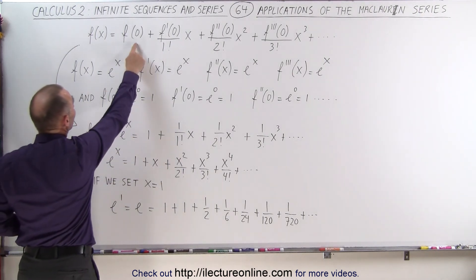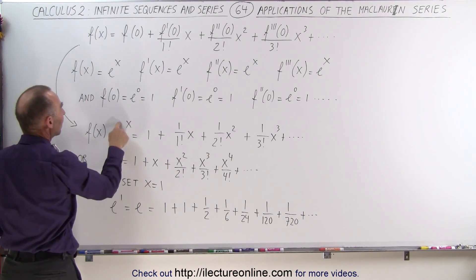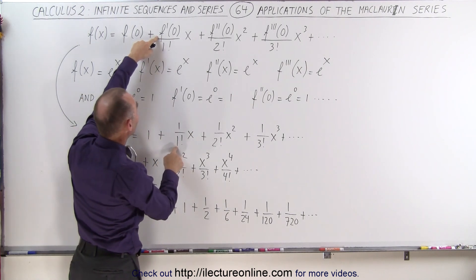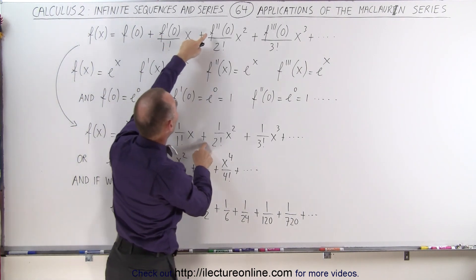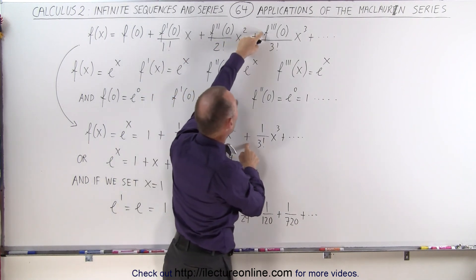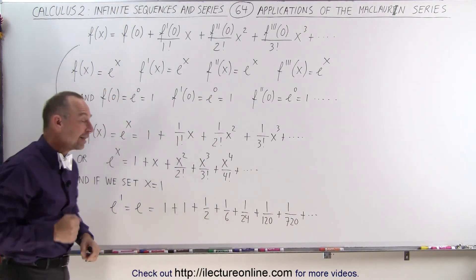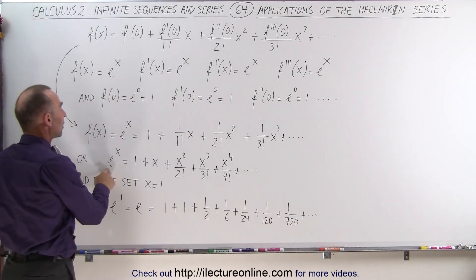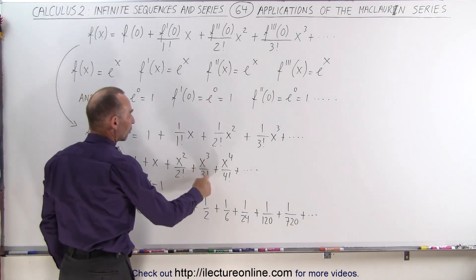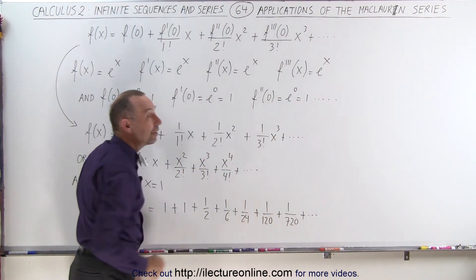Which then means if we plug that back into the original Maclaurin series, we can see that f of x, which is e to the x, is equal to 1 plus 1 divided by 1 factorial times x plus 1 divided by 2 factorial times x squared plus 1 divided by 3 factorial times x cubed and so forth. And if we simplify that, we can see that e to the x can be written as 1 plus x plus x squared over 2 factorial plus x cubed over 3 factorial plus x to the 4 over 4 factorial out to infinity.